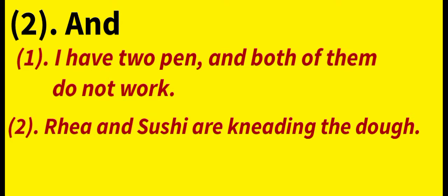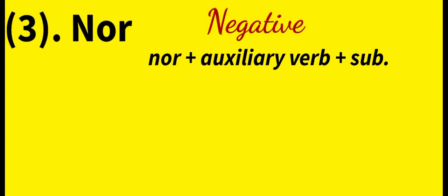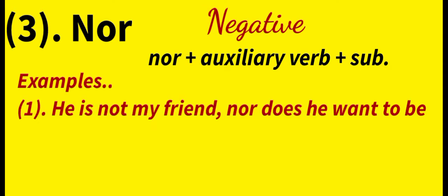The third coordinating conjunction is 'Nor.' Nor means 'and not' or 'neither.' Example: 'He is not my friend, nor does he want to be.'